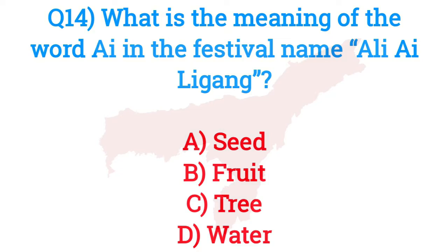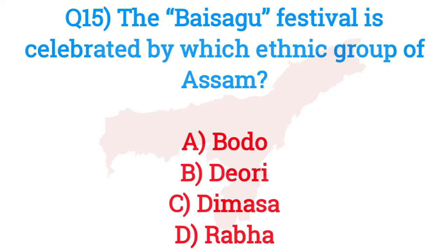Question number fourteen: What is the meaning of the word 'Ali' in the festival name Ali Ai Ligang? The answer is option B — Fruit. Question number fifteen: The Baisagu festival is celebrated by which ethnic group of Assam? The answer is option A — Bodo.